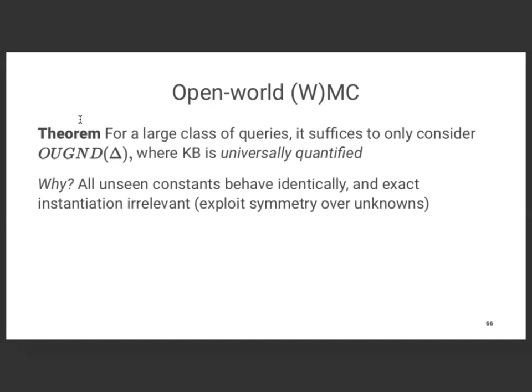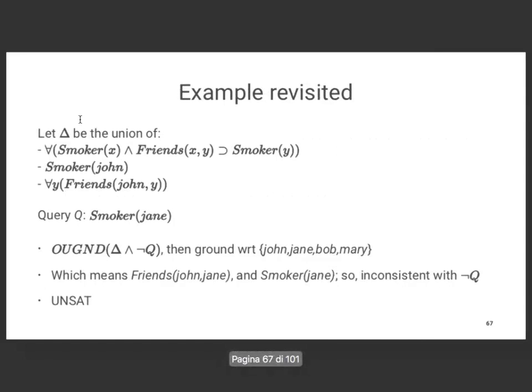Back to the example: all quantifiers are infinite, the query is 'is Jane a smoker?' You consider the negation of the query — if the negation is unsatisfiable, the query follows. The rank here is two (two variables), so you consider the constants John and Jane plus two extra arbitrarily chosen constants, say Bob and Mary. Once you ground with respect to these four, it's easy to see you get unsatisfiability, and you're done — the query follows.